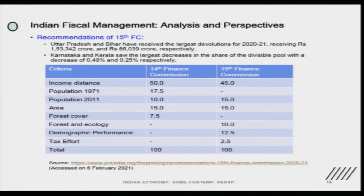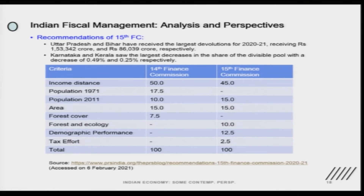The weight for population 2001 has now been given 15. That means 12.5 weights are adjusted elsewhere, since the weight for population 2011 was 10 earlier and is now 15. The area criterion remains the same. Forest cover gives 7.5 in the 14th FC, but the 15th Finance Commission does not give anything for forest cover. Forest and ecology gets 10, demographic performance gets 12.5, and tax effort — whatever taxes governments have collected at the local or state level — gets 2.5.